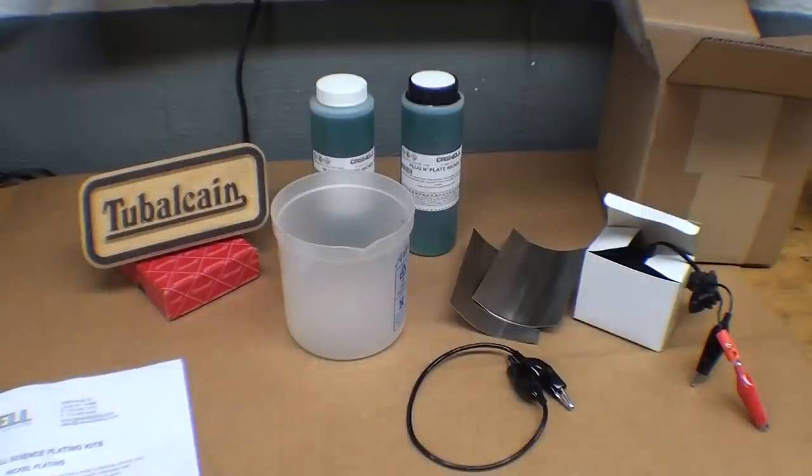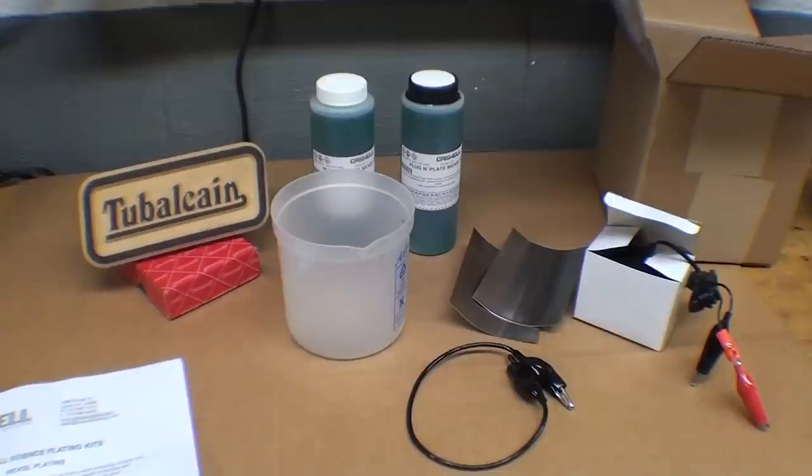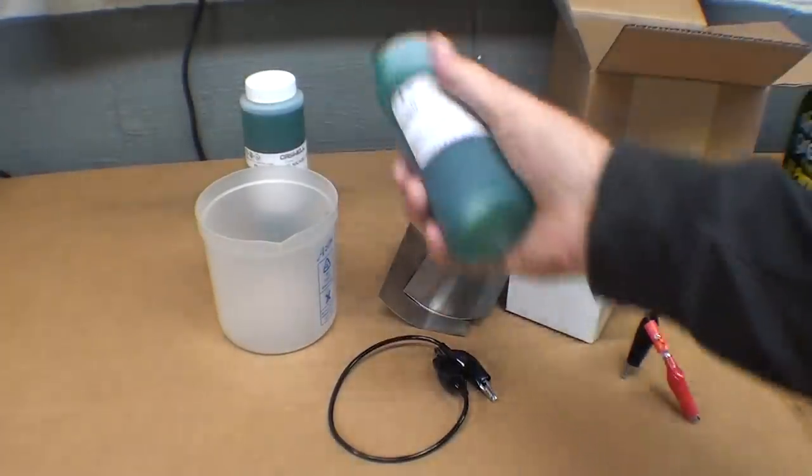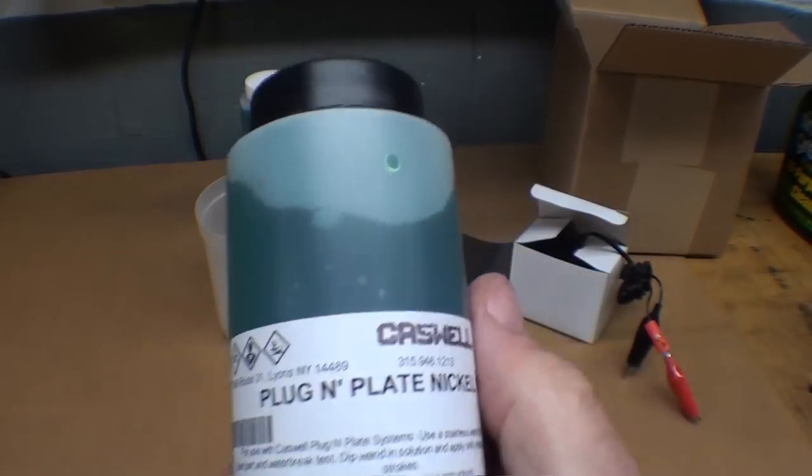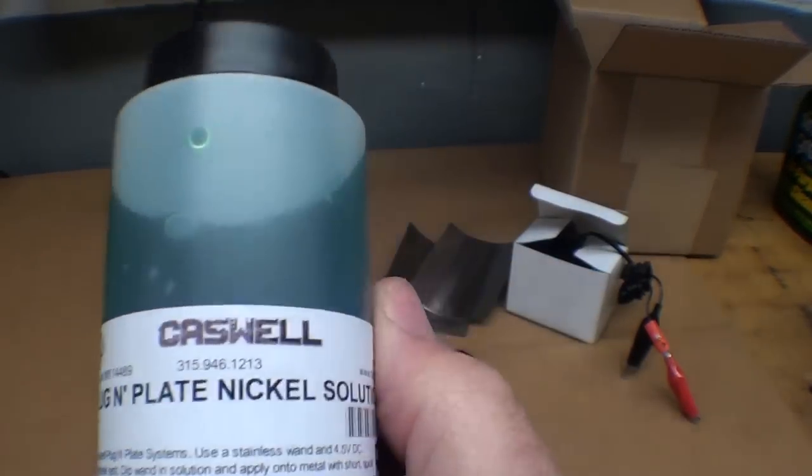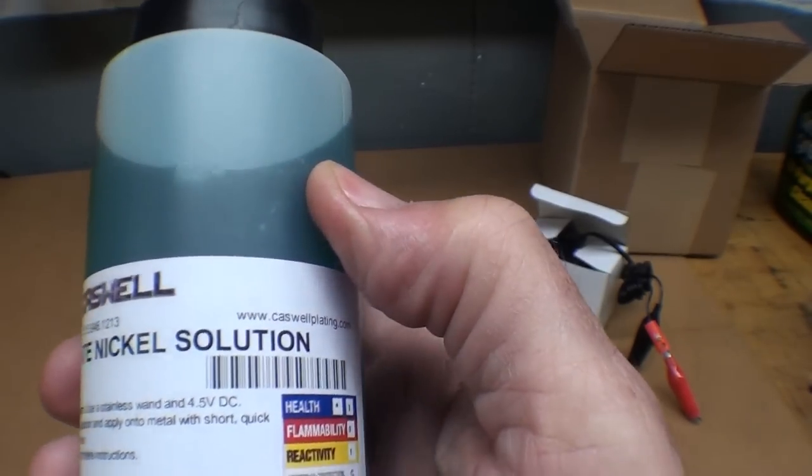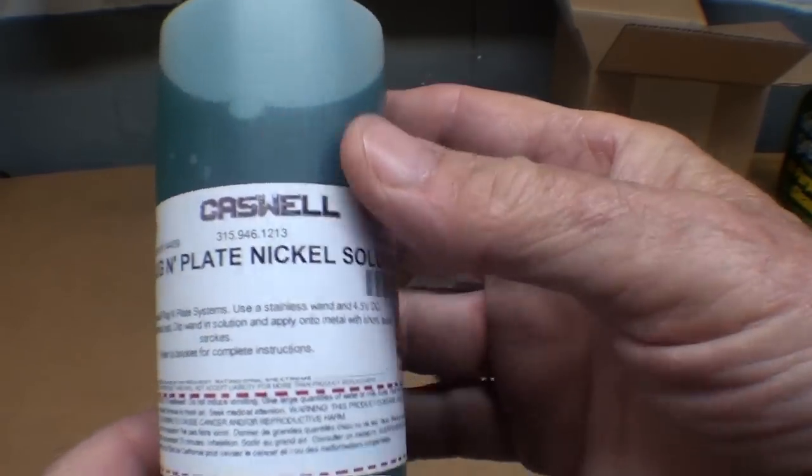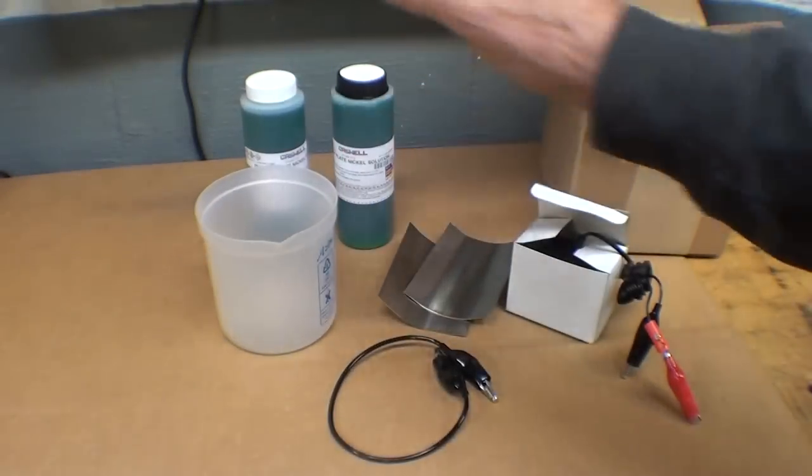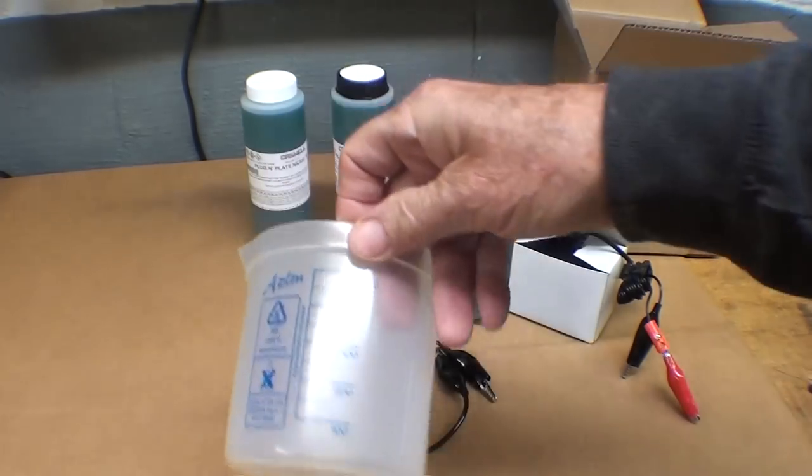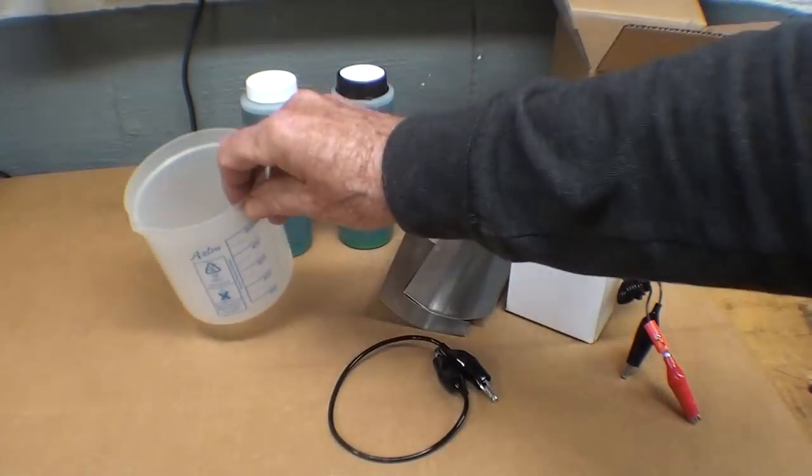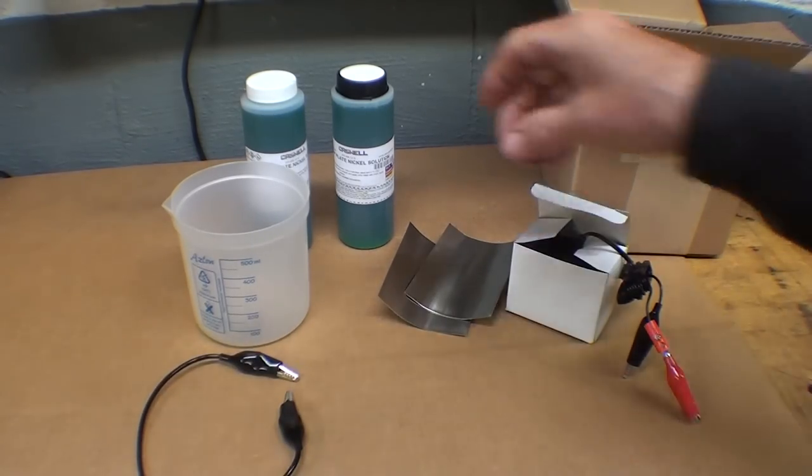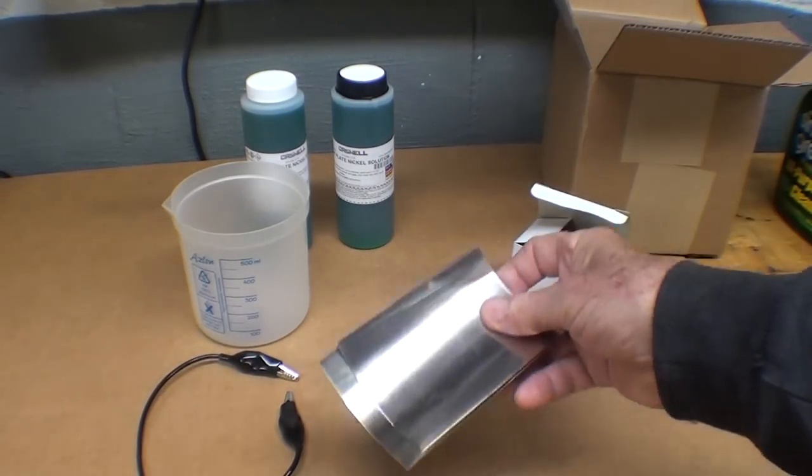Let me show you what came with this kit. In this box came two bottles of what they call plug-and-plate nickel solution. Now I don't know exactly what it is, but years ago I've been in many plating plants.